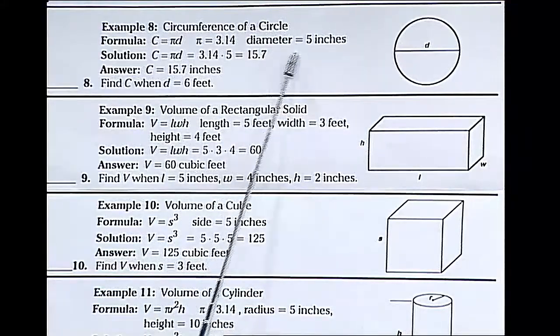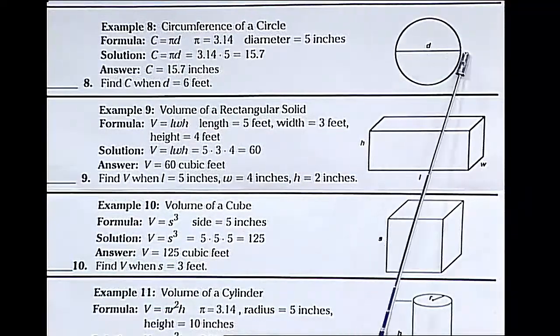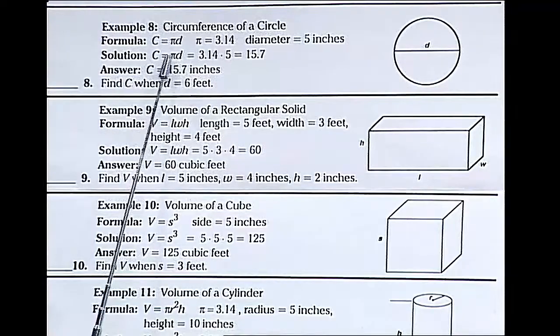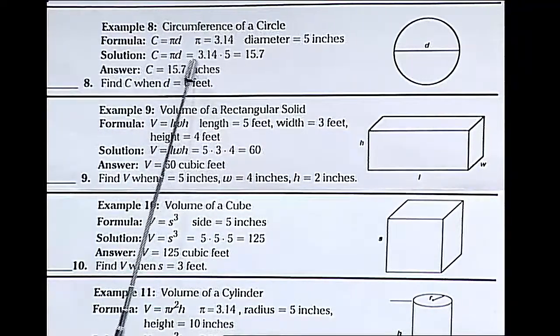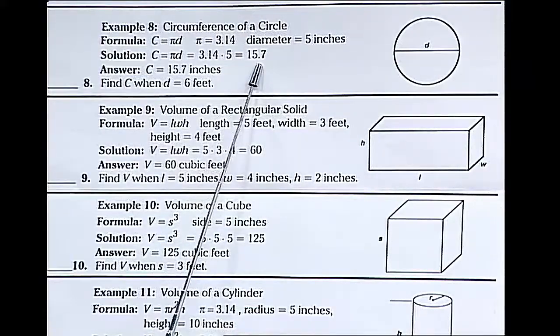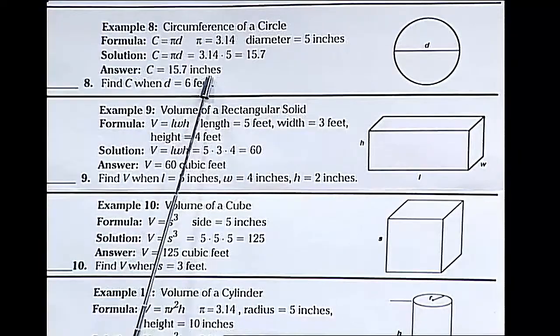The diameter is 5 inches. Notice the diameter goes all the way across the circle. Our solution is to multiply pi times the diameter, or 3.14 times 5. We get 15.7, and our answer then would be 15.7 inches.